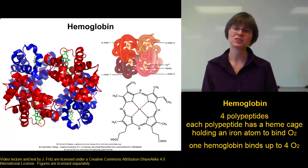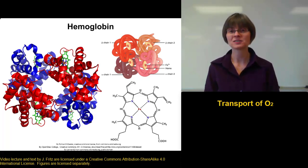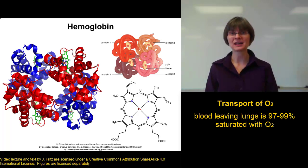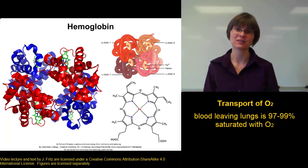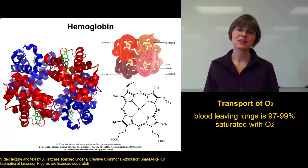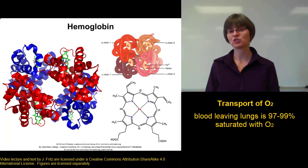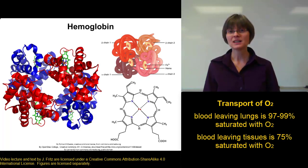Hemoglobin is really effective at binding to oxygen and carrying it around the body. Your blood comes up to your lungs to be oxygenated. When the blood leaves the lungs, it is 97% to 99% saturated with oxygen — meaning it's holding almost every oxygen molecule it could possibly hold. So nearly all the hemoglobins are loaded up with all four of their possible oxygens. That highly oxygenated blood then goes down to your tissues, and the oxygen will diffuse from the blood into the tissues.